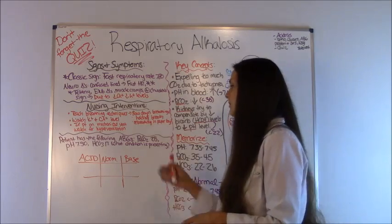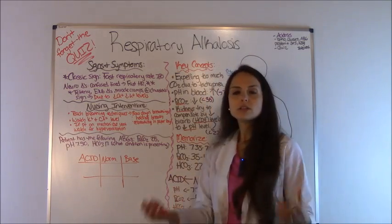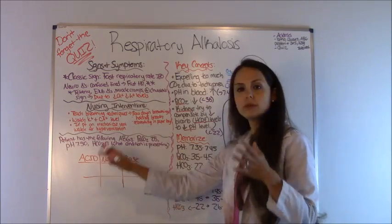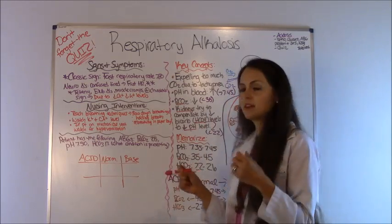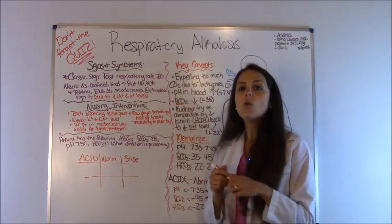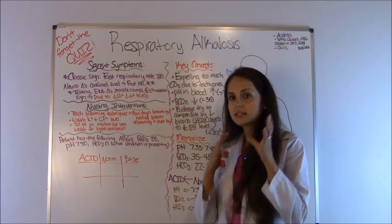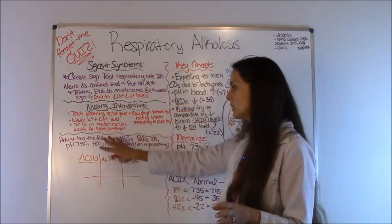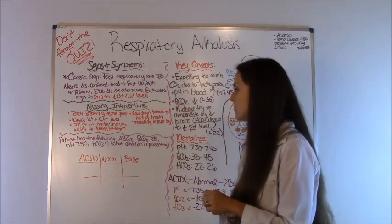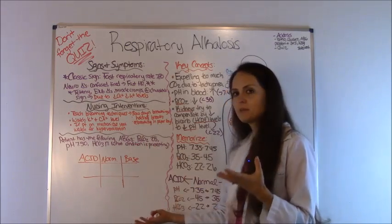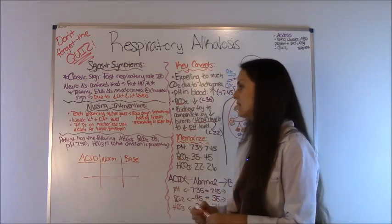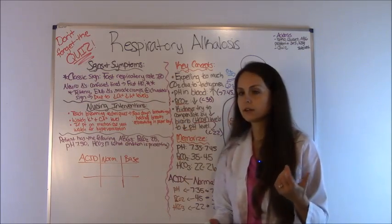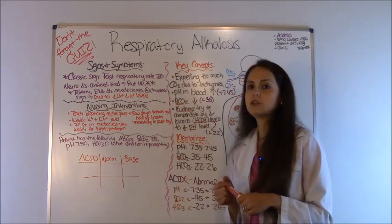Now let's solve an arterial blood gas problem. Professors and the NCLEX will give you blood gas values and ask which condition the patient is in and whether it's compensated, partially compensated, or not compensated. I like to use the tic-tac-toe method — I have videos linked in the description where I walk through how to set up the problem. You set up the tic-tac-toe grid and label one column acid, the middle column normal, and the next column base or alkalotic.